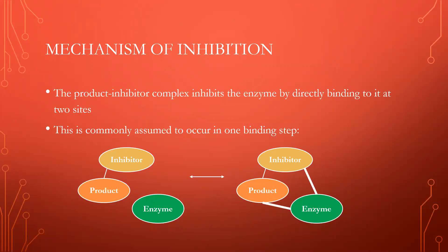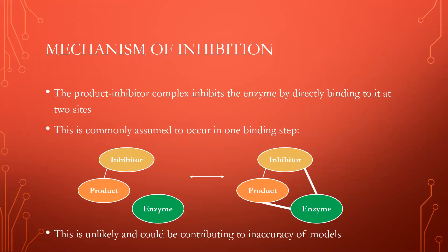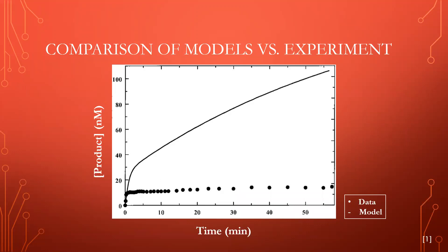Up until now, it is usually assumed that both bonds creating this complex occur in one step. This assumption is unlikely and we hypothesize that it has contributed to the inaccuracy of current models that use this assumed mechanism. These models have produced very inaccurate results. This plot shows the experimental data tracking the product formation in time overlaid with the model prediction. As we can see, these models don't match the shape or scale of the experimental data.